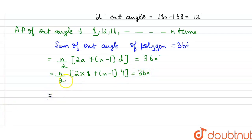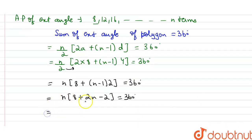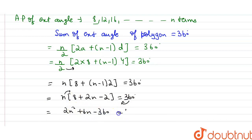Simplifying: n × (8 + (n−1)×2) = 360 degrees, which gives n × (8 + 2n − 2) = 360. So 2n² + 6n = 360, and bringing 360 to the other side: 2n² + 6n − 360 = 0.